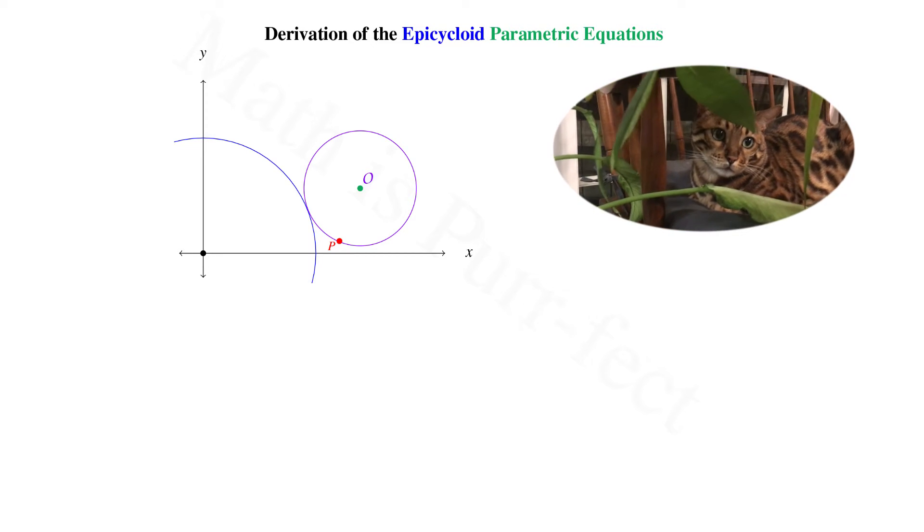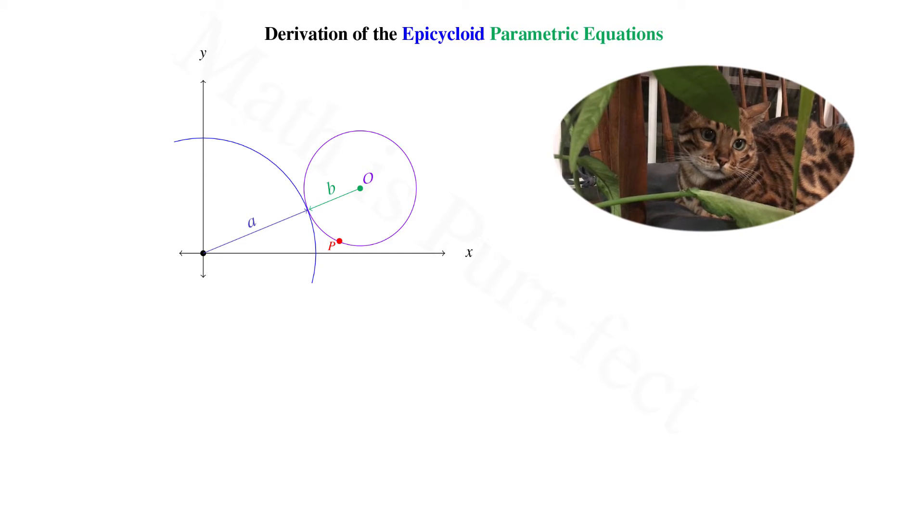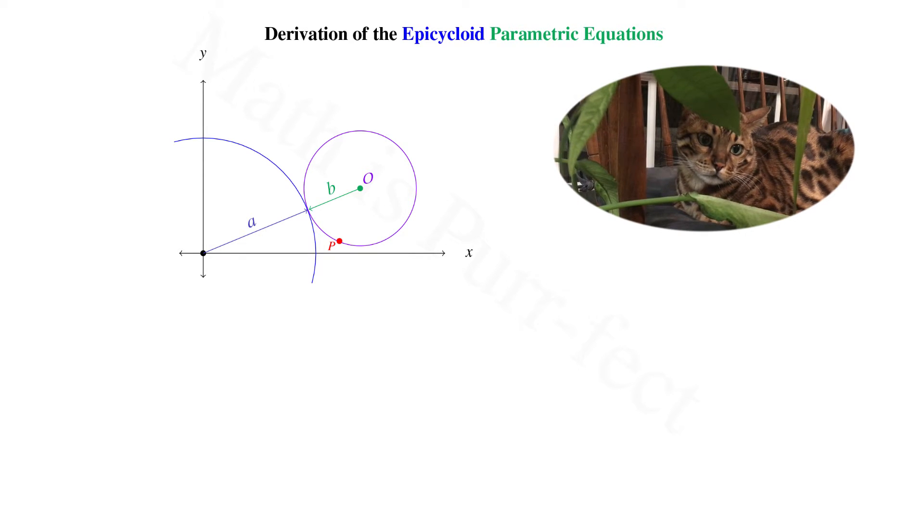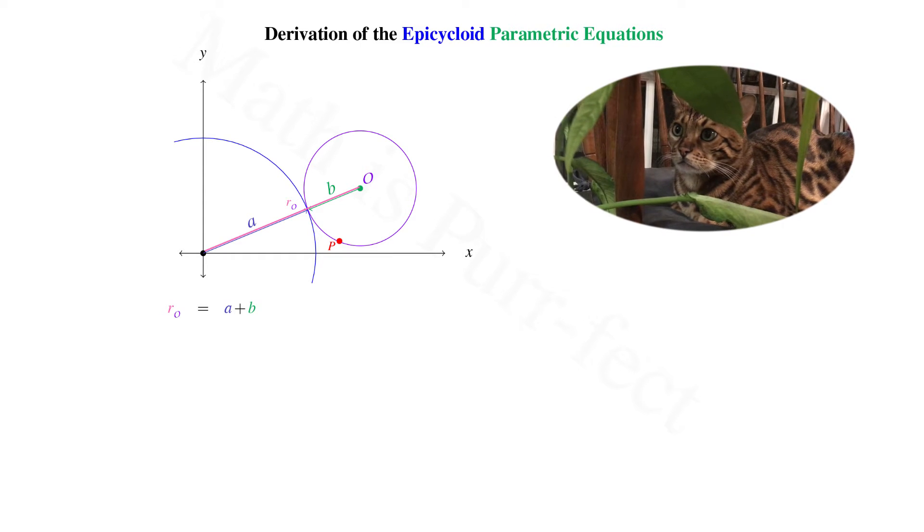We note that the distance to O from the origin is the sum of the two radii A and B. Let's call this distance radius to O, or R sub O for short. Hence R sub O equals A plus B.